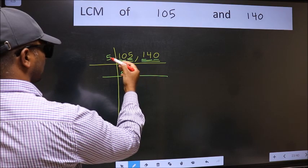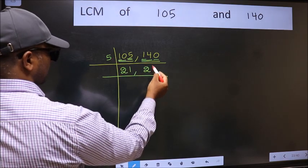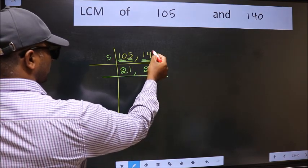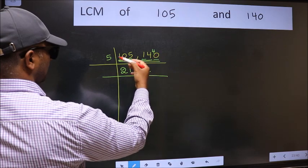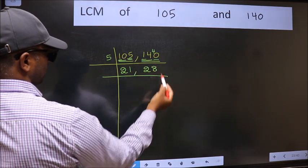A number close to 14 in the 5 table is 5 times 2 is 10. 14 minus 10 is 4. 4 carried forward is 40. When do we get 40 in the 5 table? 5 times 8 is 40.